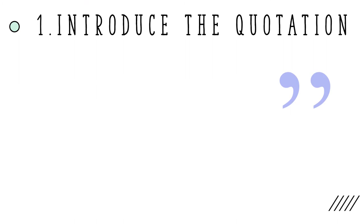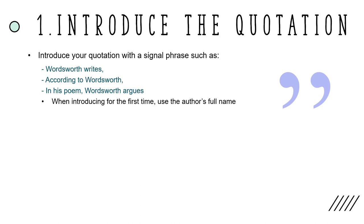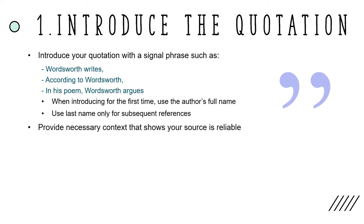Step one: introduce your quotation with a signal phrase that gives the author's name, such as "Wordsworth writes," "according to Wordsworth," or "in his poem, Wordsworth argues." This indicates to your reader that what you're about to say comes from an outside source. When introducing a source for the first time, use the author's full name, then use the author's last name only for any subsequent references. When using secondary sources, provide any necessary context that lets the reader know that your source is reliable.